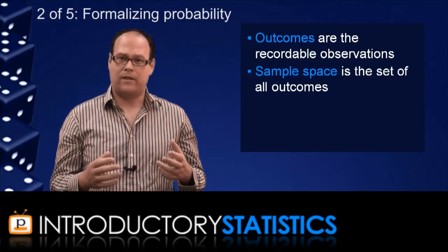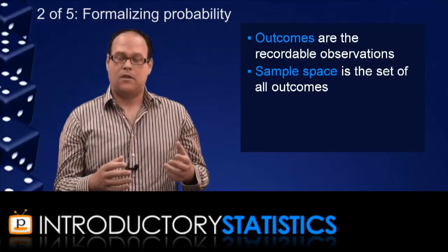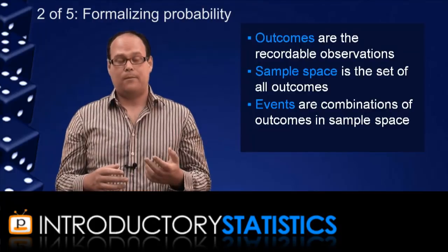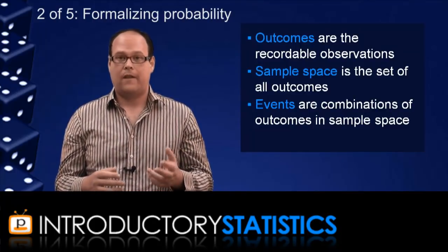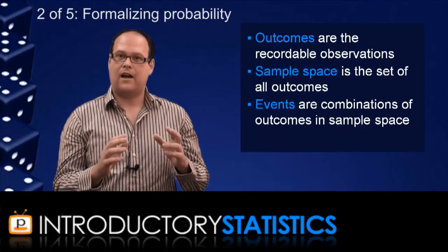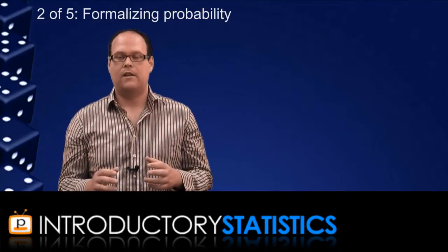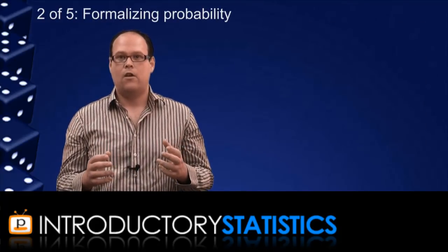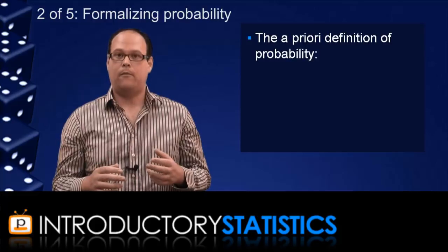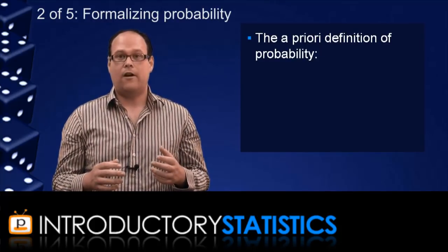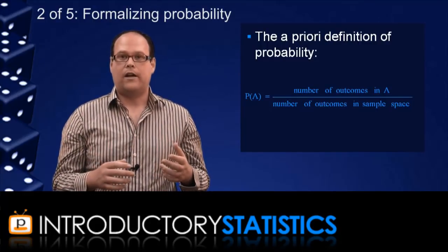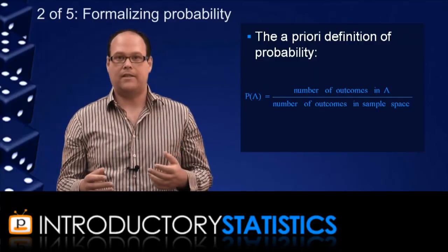Now an event within that sample space is any of those outcomes or any combination of those outcomes. So for example, if you're going to roll a die, then an example of an event would be that you roll an even number. Now that is actually consisted of three different outcomes: a two, a four and a six. So events are combinations of outcomes in a sample space. Now with that formalisation of outcomes and events, we can define a priori classical probability. Under a priori classical probability, the probability of an event, A, is defined to be a fraction. It's equal to the number of outcomes in that event, A, divided by the total number of outcomes in the entire sample space that you're looking at.